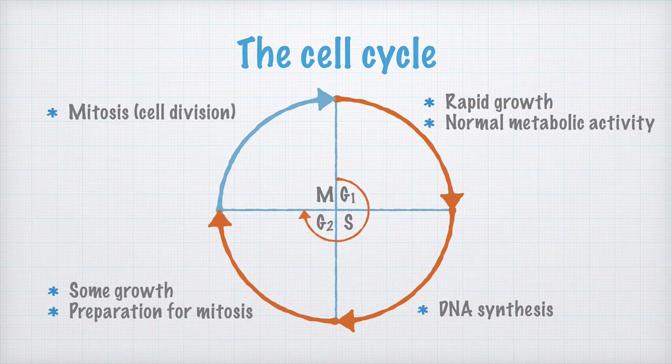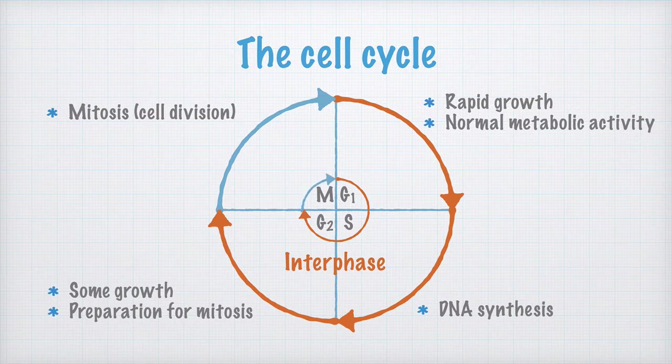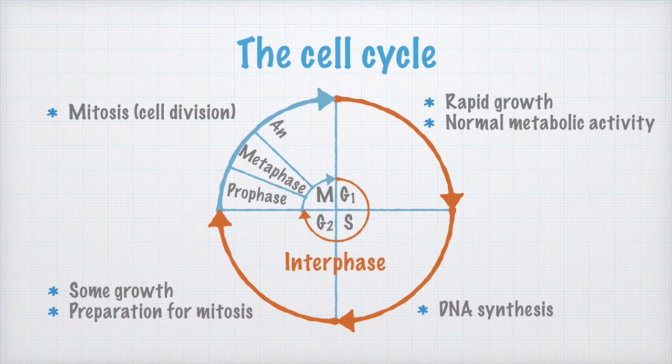The G1, S, and G2 phases together form what is called interphase, which literally means the phase between the cell divisions. The mitosis is divided into several phases, of which prophase, metaphase, anaphase, and telophase are the main ones.